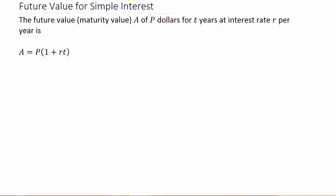Here it says the future value or maturity value A, that would be this term, that's your future value, of P dollars for T years at interest rate R per year is, and then A equals P times 1 plus RT.